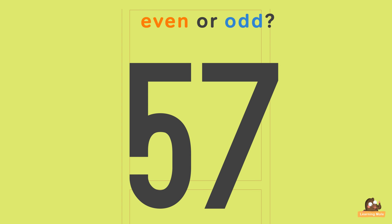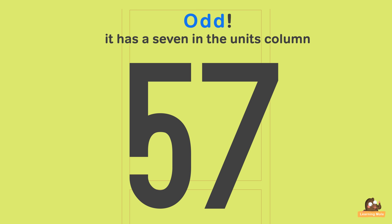44 — even or odd? Even! It has a 4 in the units column. 57 — even or odd? Odd! It has a 7 in the units column.